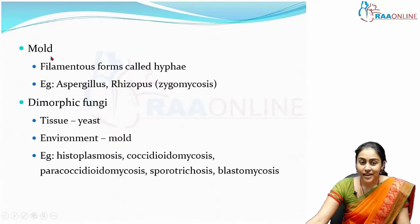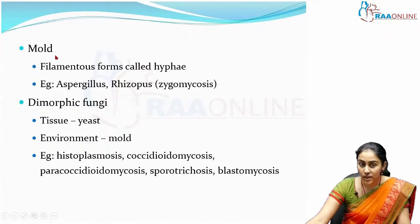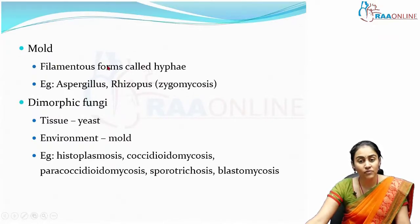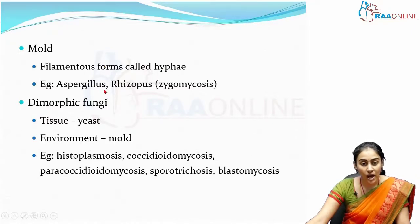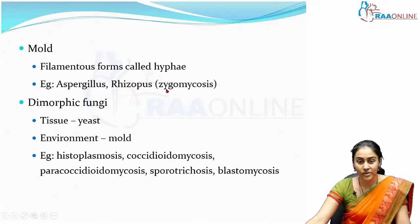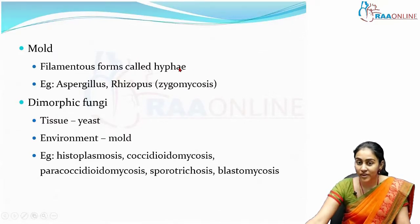The next category of fungi are molds, which have filamentous forms called hyphae. The important molds include Aspergillus and Rhizopus, which includes the zygomycoses or the more commonly known Mucor.